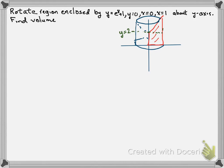Since we're going around the y-axis, if we take a slice there we get a delta y, which means we need the function in terms of y. So we need to find the inverse. Starting from our original function, we get y minus 1 equals e to the x, and using natural logs, x equals ln of y minus 1. That won't be a problem for our limits, so we won't need the absolute value.